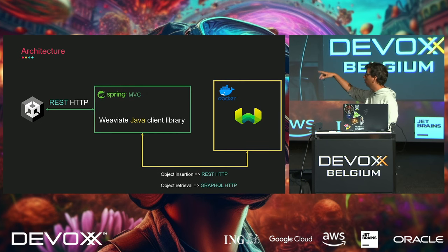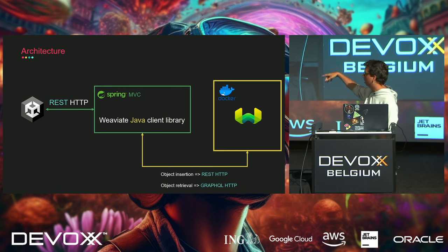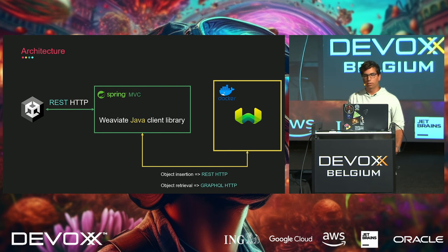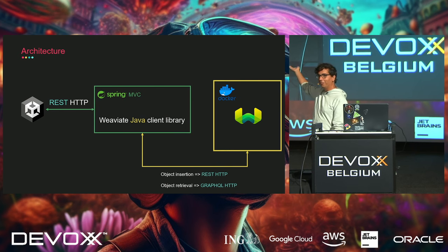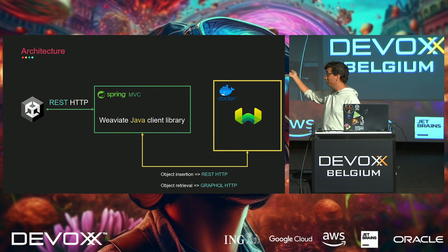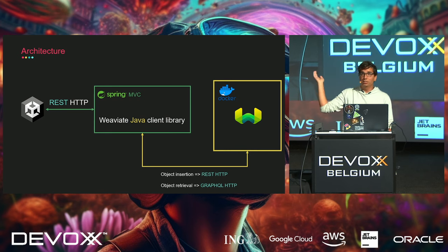For the architecture, through a REST API I call my back-end server, and then the client library calls the Docker container running Weaviate, which does REST and GraphQL calls. Some of you might think 'you could call it from Unity directly, why have a back-end?' — well, I'm a back-end developer, and my job description is basically to create abstraction layers that aren't necessary. So that's what I did here.